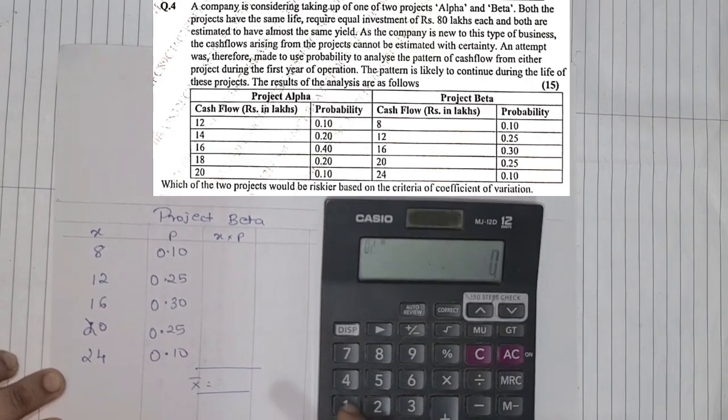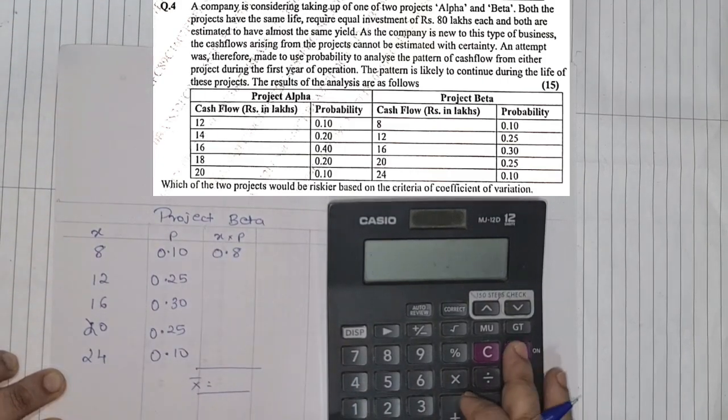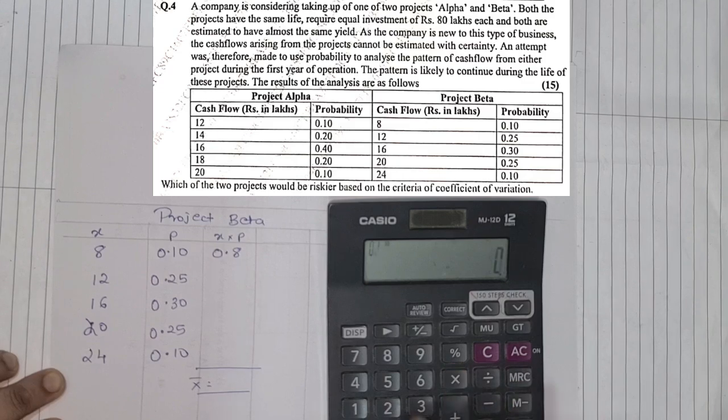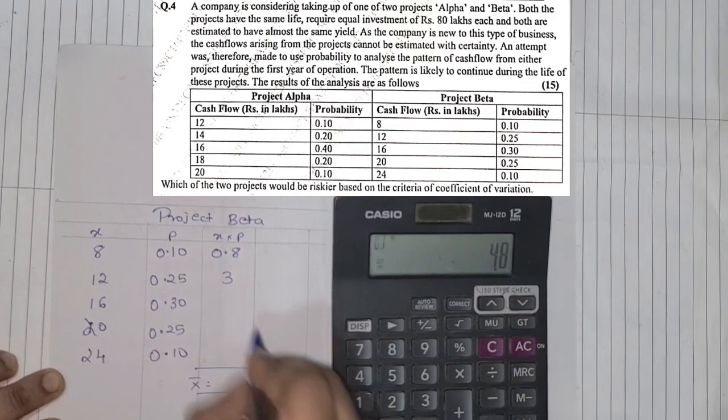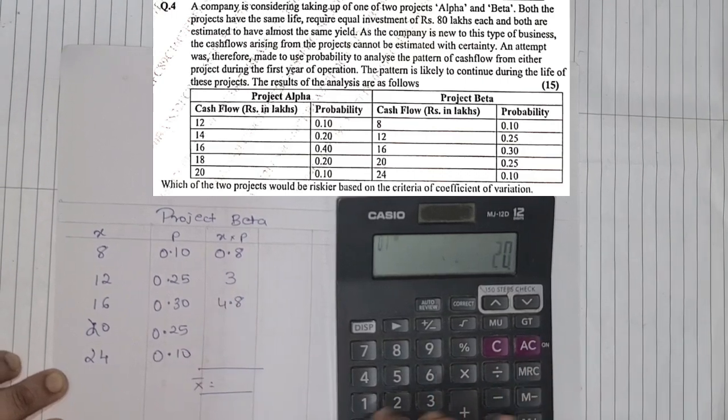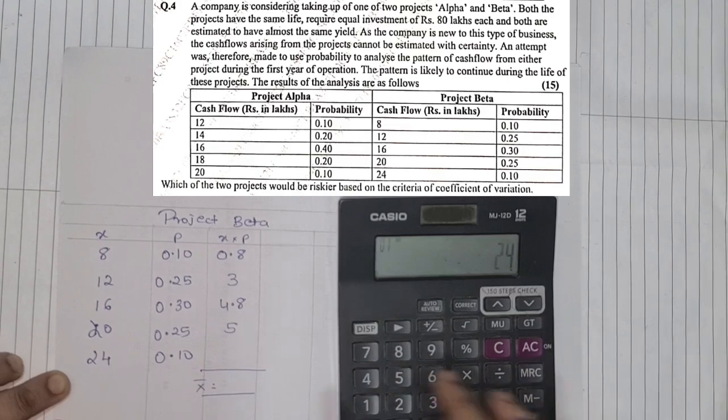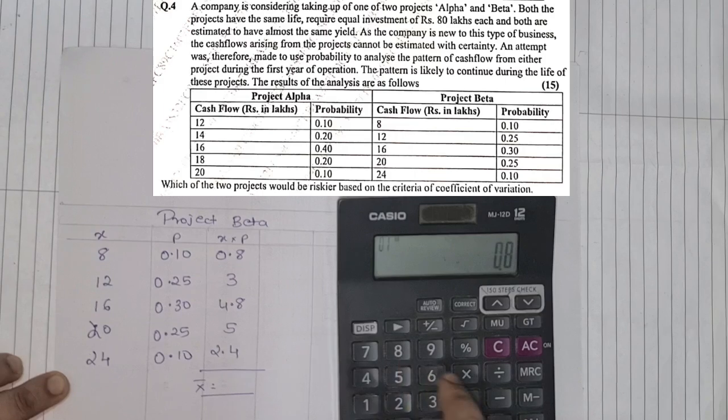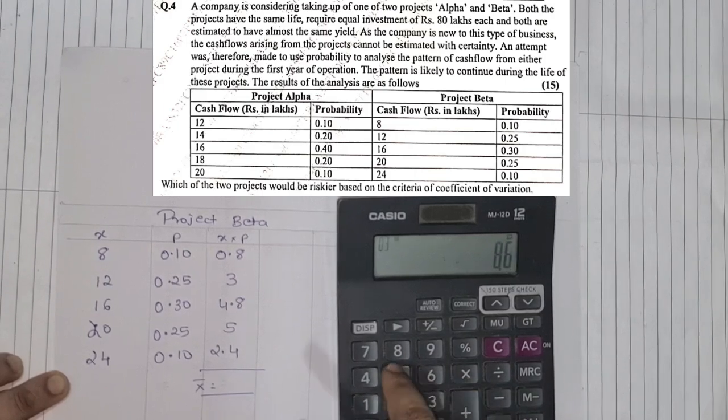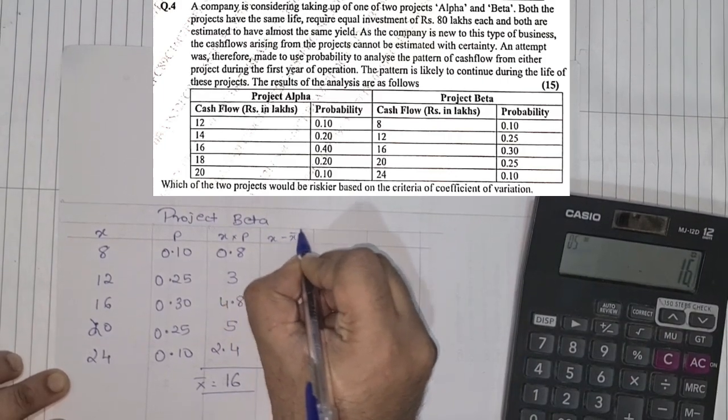Now we multiply so that we can get X bar. So 8 into 0.1 is 0.8, next 12 into 0.25 is 3, 16 into 0.3 is 4.8, 20 into 0.25 is 5, and 24 into 0.1 is 2.4. We add up 0.8 plus 3 plus 4.8 plus 5 plus 2.4, the value comes to 16.